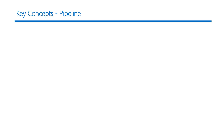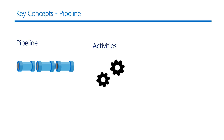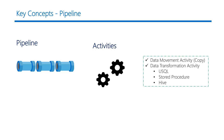A data factory can have one or more pipelines. A pipeline is a logical grouping of activities that together perform a task. There can be two types of activities in a pipeline: data movement or a copy activity, and data transformation activities like U-SQL, stored procedure, or a Hive activity.